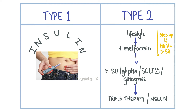If after initiating an oral medication the HbA1c is still above 58 mmol/mol then a second drug should be added. Second line treatment options include sulfonylureas, gliptins, glitazones or SGLT2 inhibitors. Sulfonylureas like gliclazide work by stimulating insulin release and are associated with a risk of hypoglycaemia and weight gain.